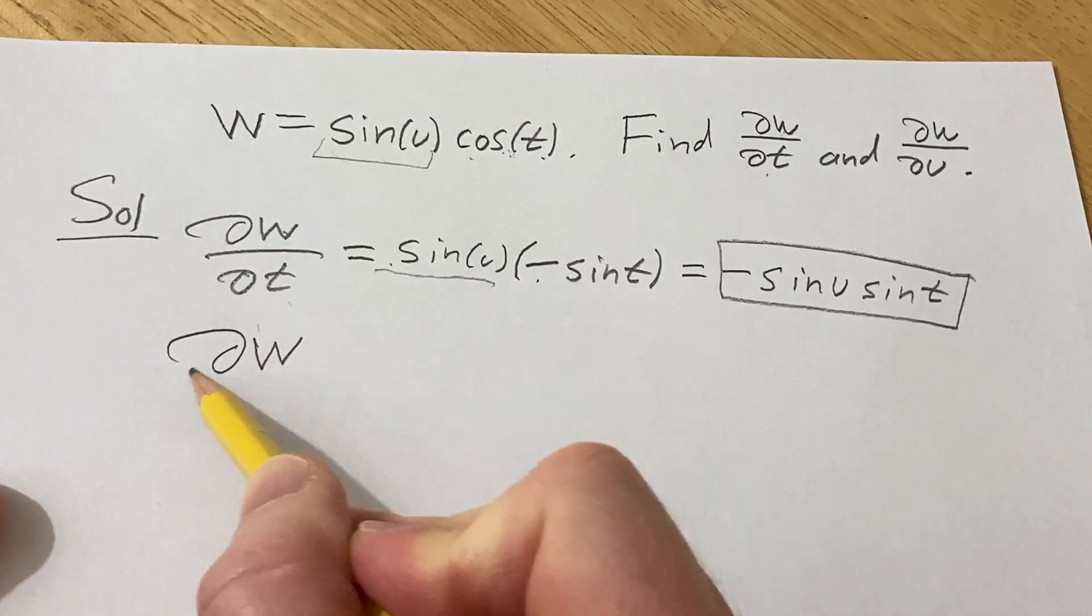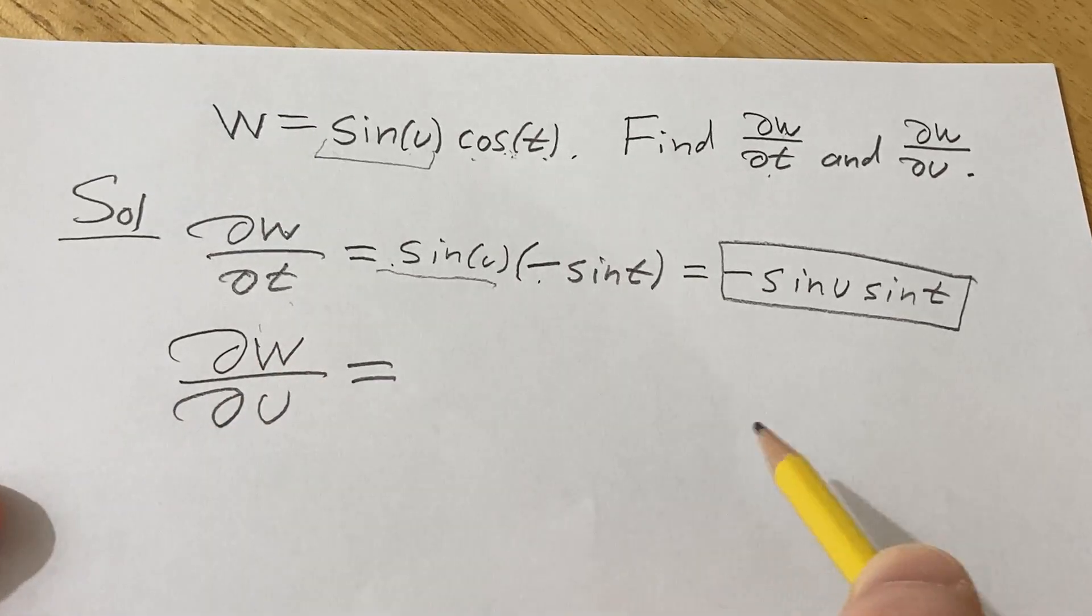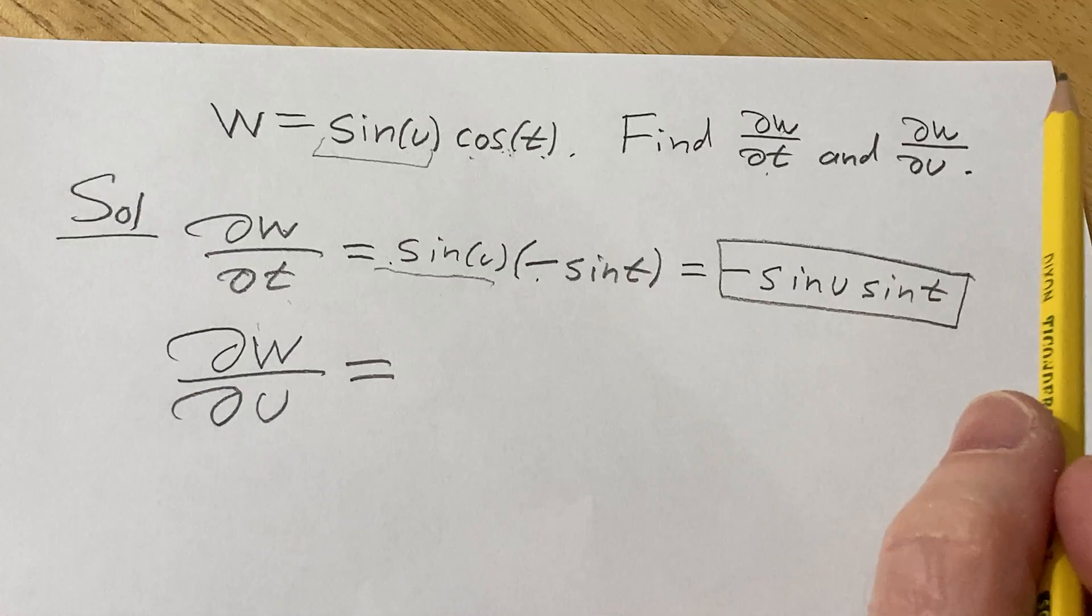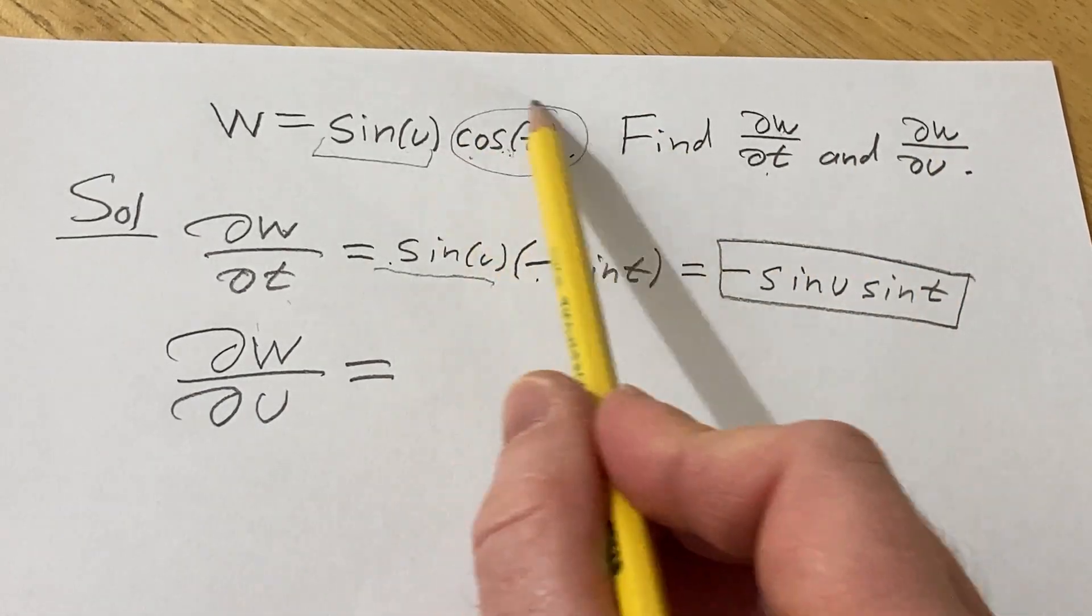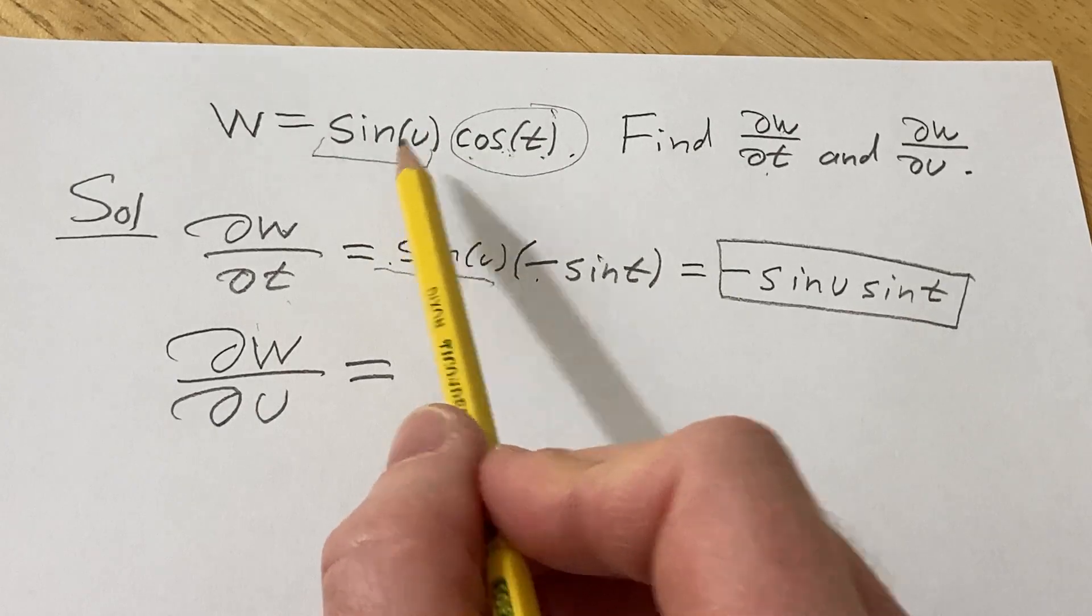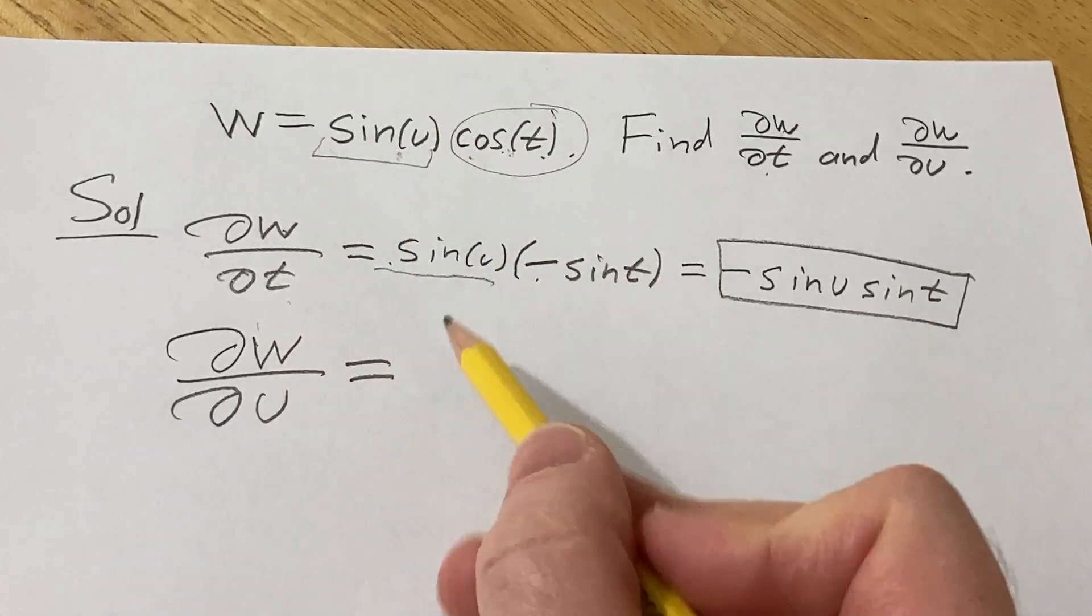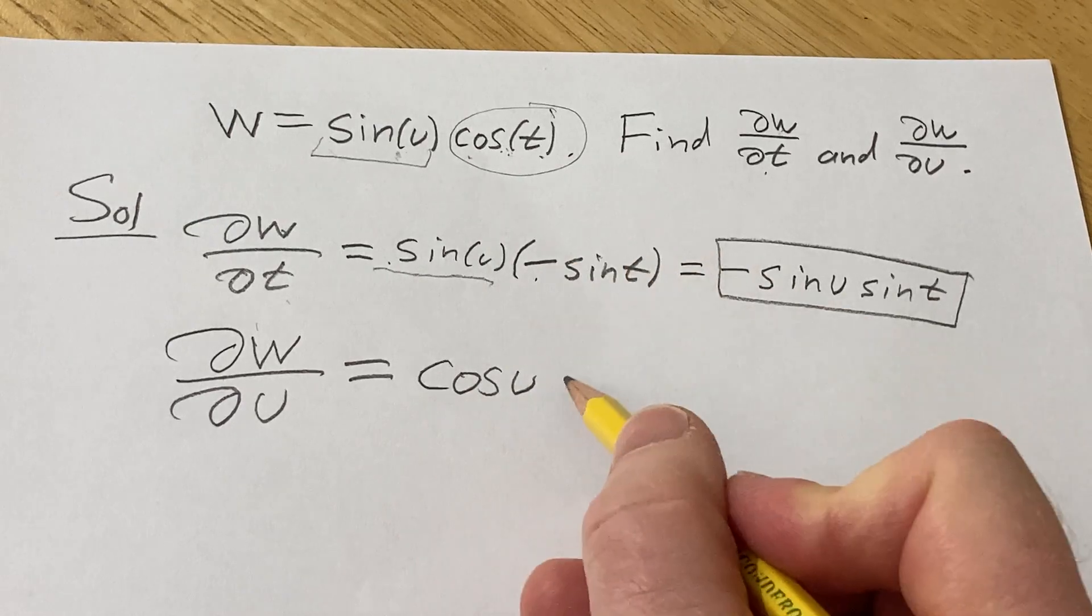Let's find the derivative of w with respect to u. In this case, we're going to treat all of the t's as constants. So basically this is going to hang out, and we're just differentiating sine. The derivative of sine is cosine, and this piece just hangs out.